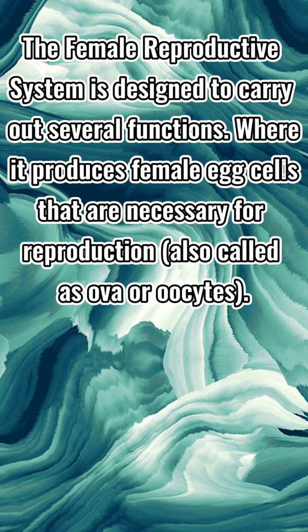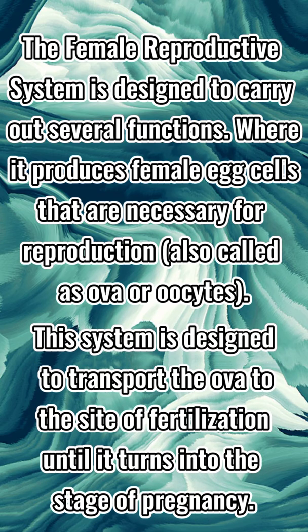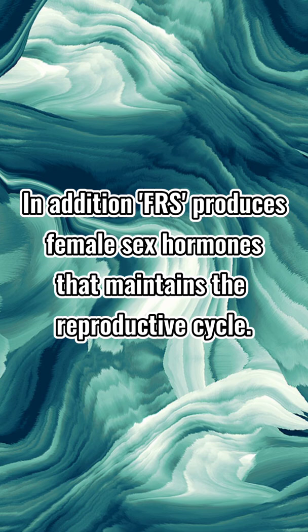The female reproductive system is designed to carry out several functions. It produces female egg cells necessary for reproduction, also called ova or oocytes. This system is designed to transport the ova to the site of fertilization until it reaches the stage of pregnancy. In addition, it produces female sex hormones that maintain the reproductive cycle.